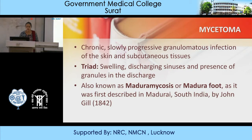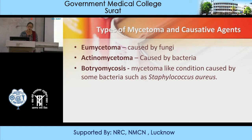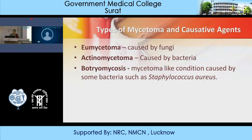What are the types of mycetoma or Madura mycosis? They are mainly of three types: Eumycetoma, Actinomycetoma, and Botryomycosis. Eumycetoma is responsible mainly because of fungi. Actinomycetoma is caused by bacteria, and Botryomycosis is generally caused by bacteria such as Staphylococcus aureus.